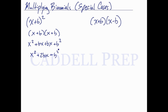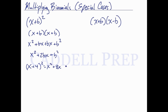So what this means is we can immediately get the product of these two binomials if we follow this format. For example, x plus 4 squared: I know it's going to be x squared plus 2 times 4, which is 8x — I just put in 4 for b — and then plus b squared, so plus 4 squared, which is 16.